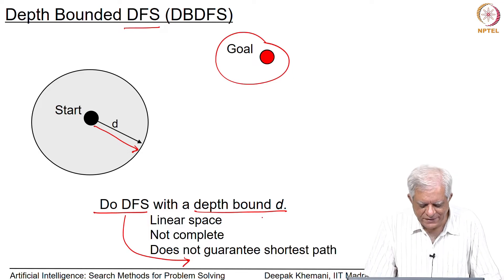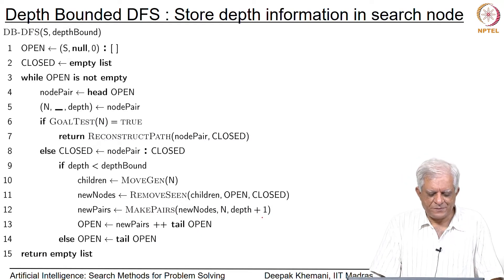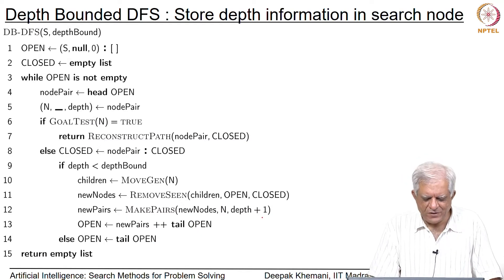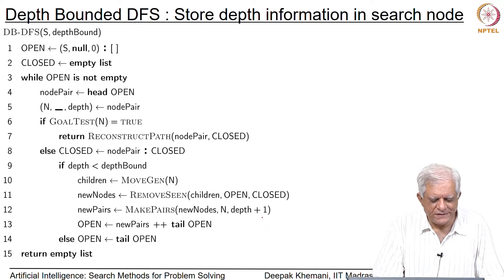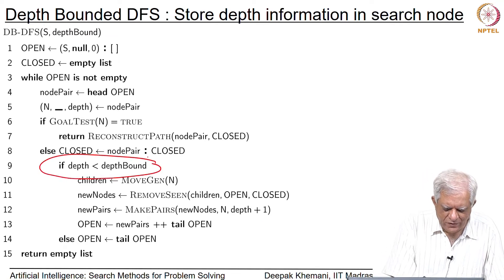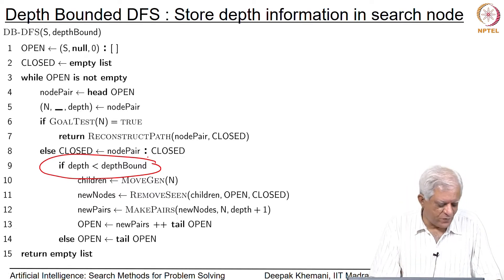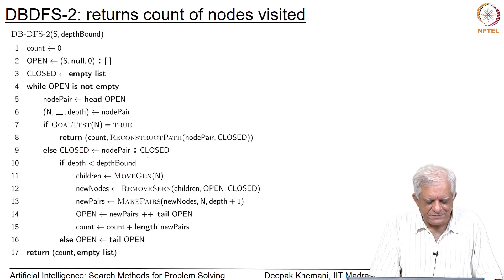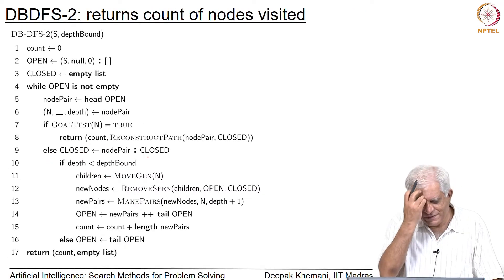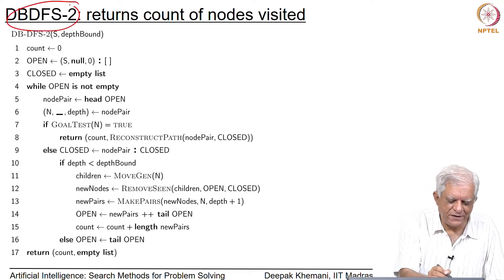This is not something very exciting, but we can use this algorithm to construct a new algorithm. This is just the code for depth bounded depth first search if you are writing the program. The key thing to note here is that you move forward only if you are within the depth bound; otherwise you do not move forward. There is a variation on this algorithm which we call db-dfs-2.